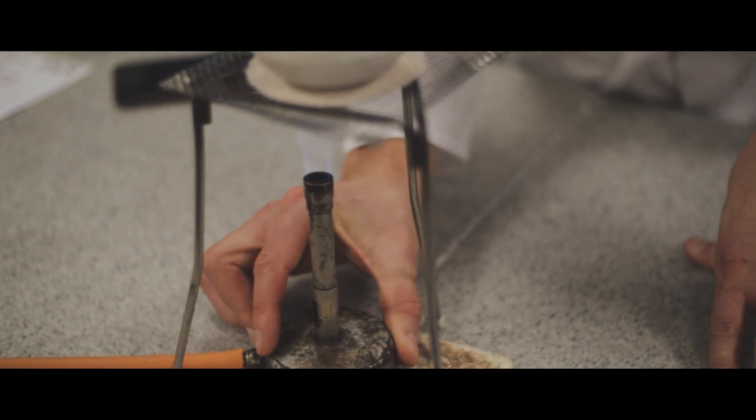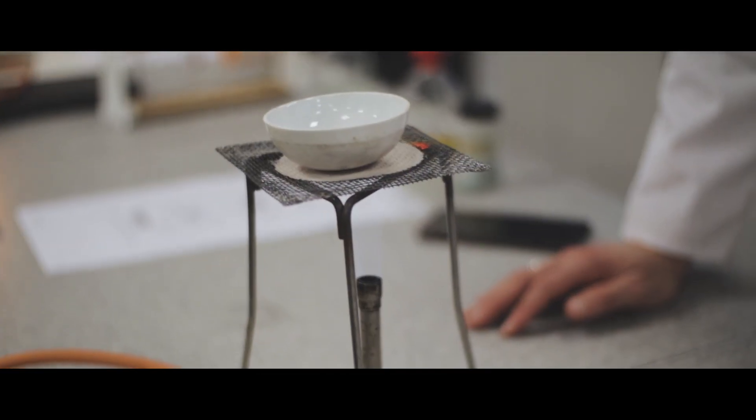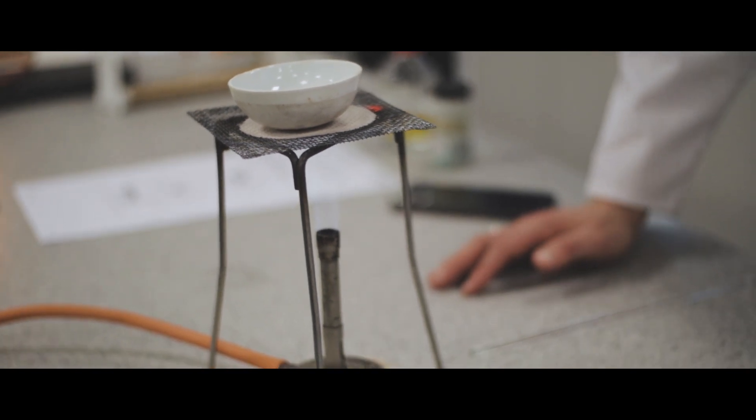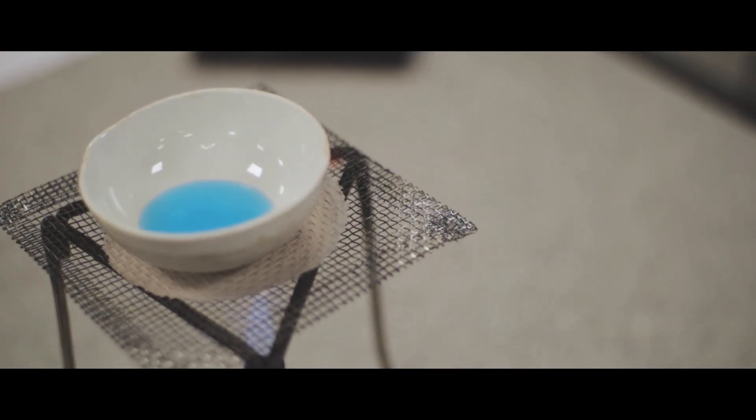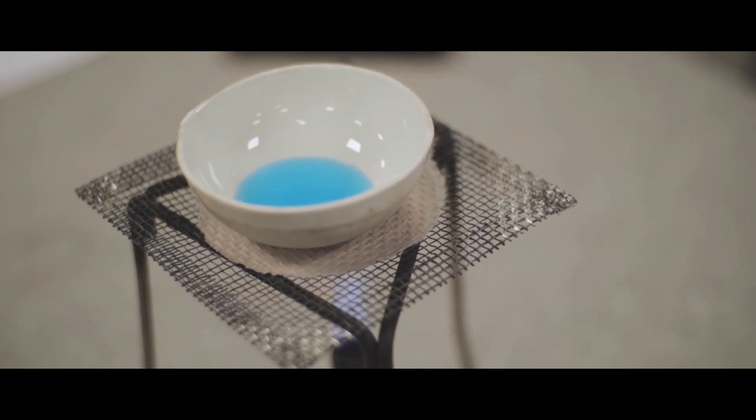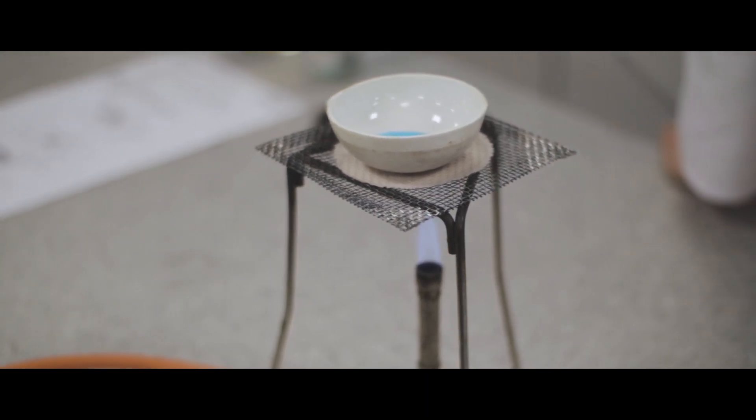To get the nice deep blue copper sulfate crystals, we don't want to heat it completely dry. The blue crystals are actually hydrated copper sulfate. If we heat it too strongly, we'll get white copper sulfate. So we want to stop heating when most of the liquid has been removed and then allow it to cool more slowly to leave those nice blue crystals behind.